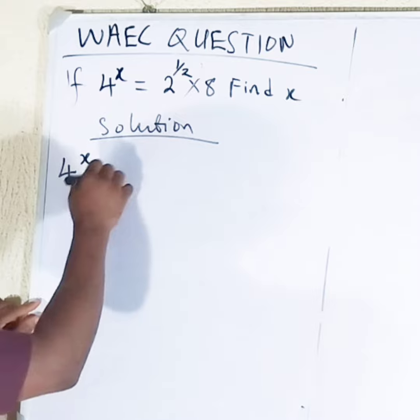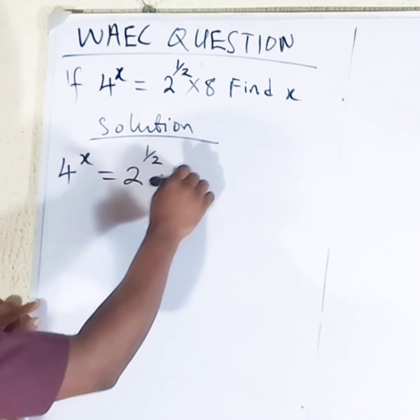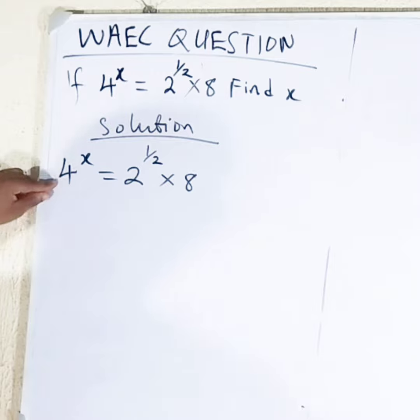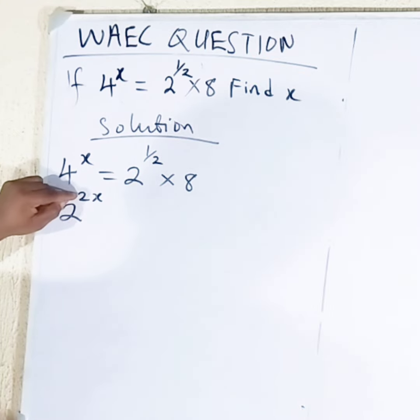4 raised to the power x is equal to 2 raised to the power half times 8. Of course you know that 4 means 2 raised to the power 2, so we have 2 raised to the power 2x.